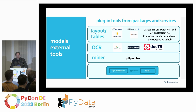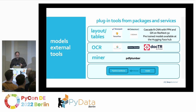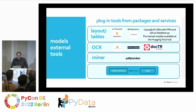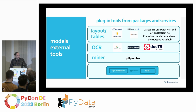The idea is that you pick one model for a specific task, plug it into the backbone of the pipeline, and the backbone handles the orchestration — gathering all the information, recalculating the necessary values, and grouping the results.